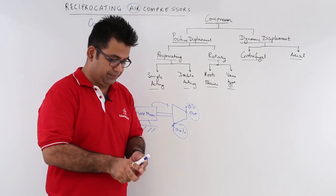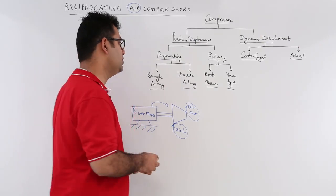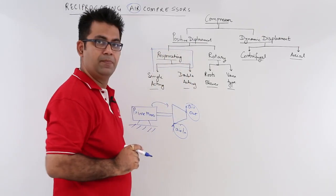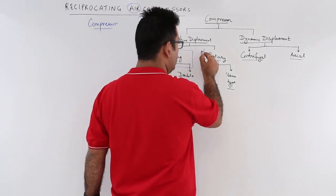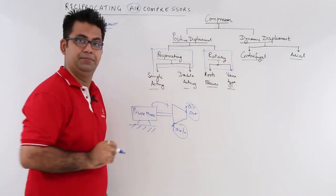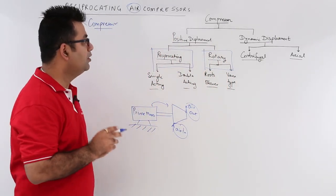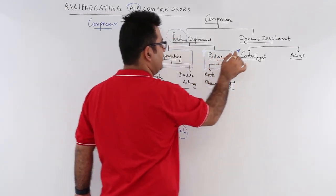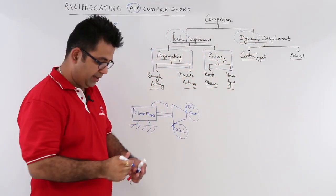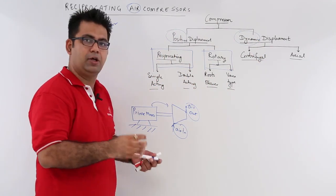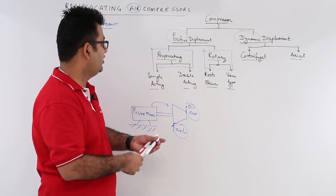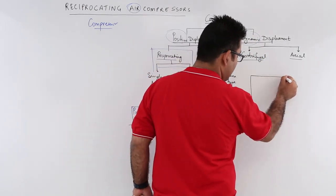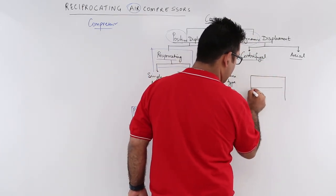In this video series, we will start by focusing our attention on reciprocating air compressors and then move on to rotary air compressors. Now, a very important difference: what is a positive displacement and what is a dynamic displacement type? If you draw a very crude diagram of a reciprocating air compressor, this is how it would look.